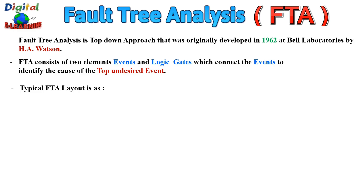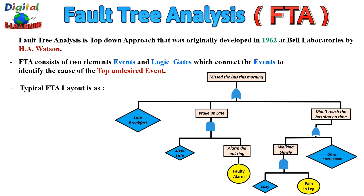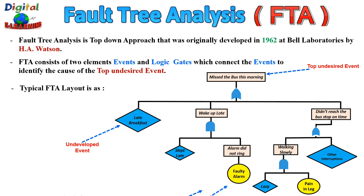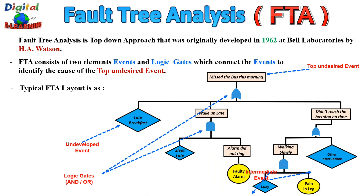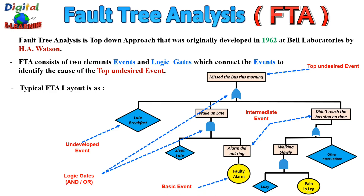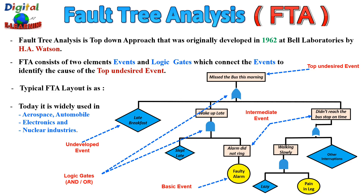Typically, the FTA layout looks like this, where the top undesired event is the last event to occur. Then we have the undeveloped events, the logic gates — whether AND gate or OR gate — the intermediate events, and finally the basic events. We are going to look at all of these in more detail in the coming slides. Today, FTA is widely used in aerospace, automobile, electronics, and nuclear industries.